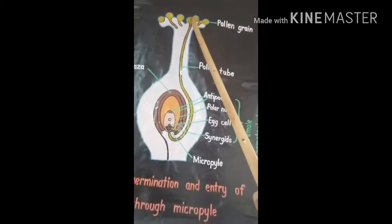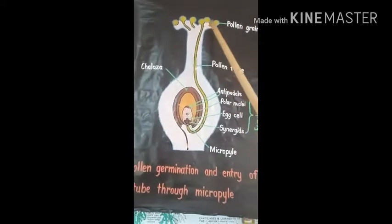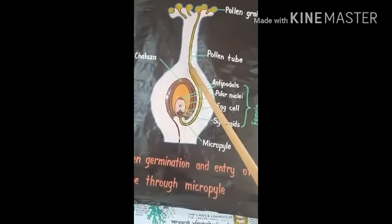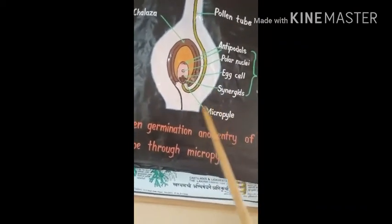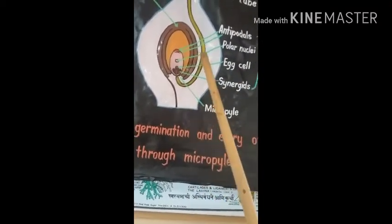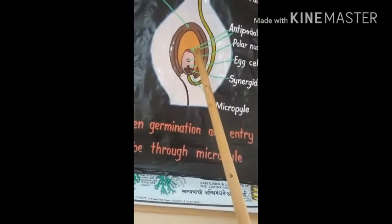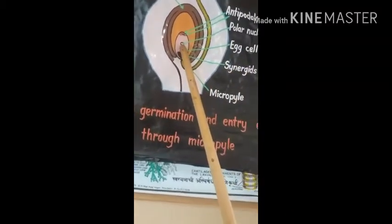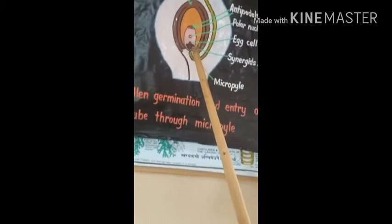The male sex organ — the pollen grain with its half number of chromosomes — by the process of pollination is transferred to the female part of the flower. It starts germinating and produces a tube, and by means of that tube the male gamete enters the female gamete through the micropyle. It fuses with the egg cell to form the zygote, which has the diploid number of chromosomes. The remaining male gamete fuses with the two polar nuclei to form the endosperm, which shows the triple number of chromosomes. So the zygote is formed by the fusion of the egg cell and one male gamete, while the polar nuclei and the other male gamete form the endosperm with the triple number of chromosomes.